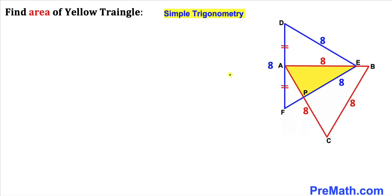Welcome to PreMath. In this video we have these two identical equilateral triangles that overlap each other as shown in this diagram, such that their side length is eight units. Moreover, line segment AD equals AF, and we are going to calculate the area of this yellow shaded triangle.